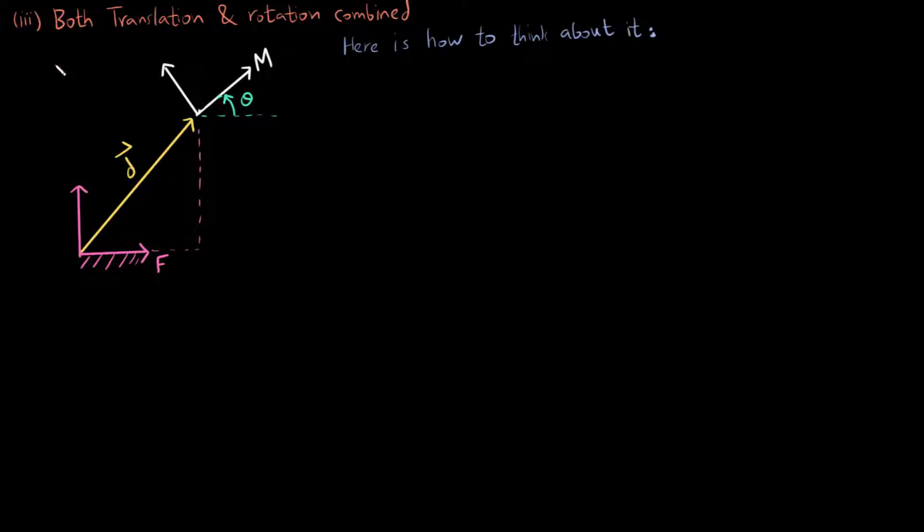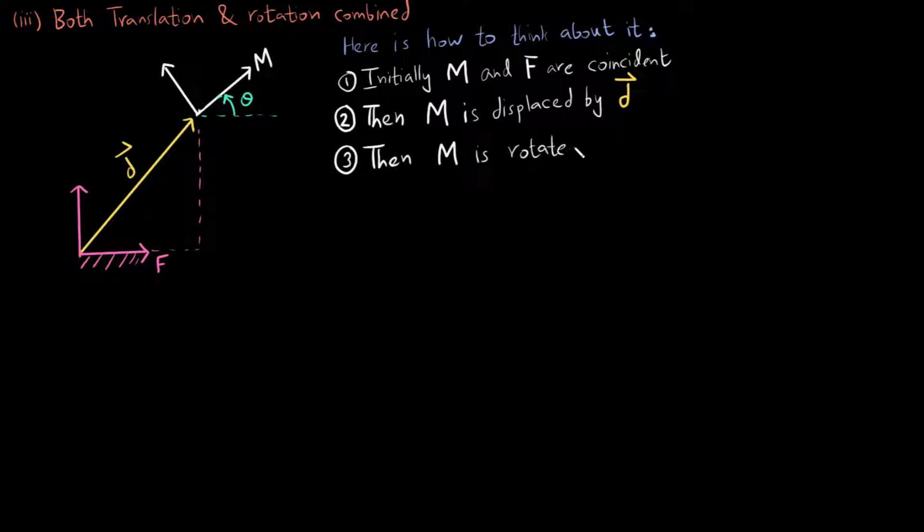Here is how you should think about it. First the moving frame and the fixed frame are at the same position, their origins coincide, then the moving frame is displaced by a vector d so its orientation isn't changed, it is just displaced, and then once it is at the vector d it is rotated about an angle theta in the anticlockwise direction.